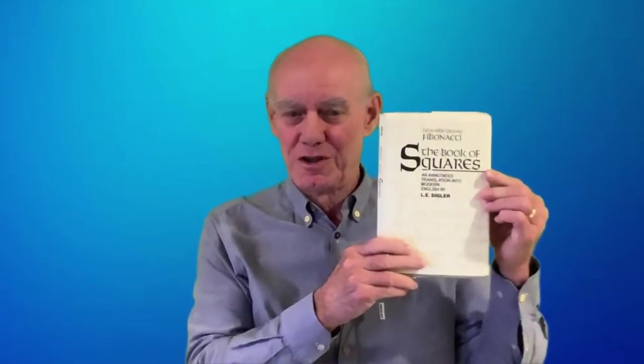In the last video, we talked about the Fibonacci sequence. Fibonacci published his sequence in this book, The Book of Squares, which he wrote in the year 1220.